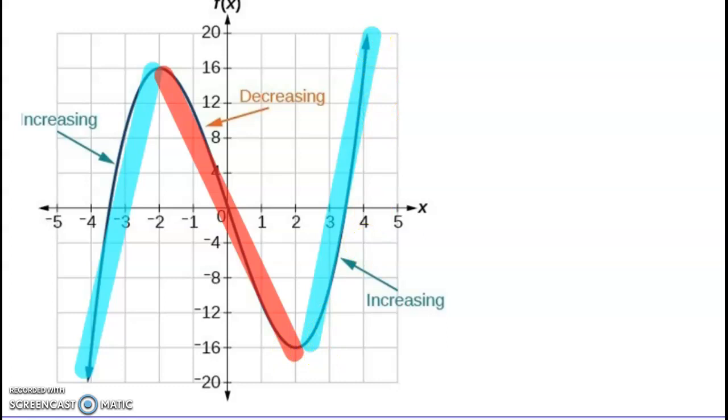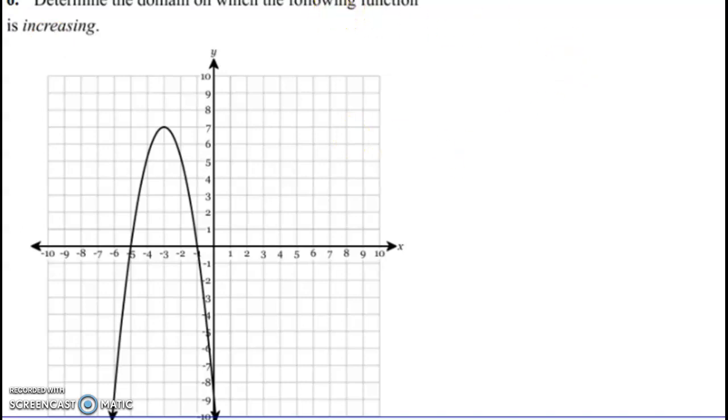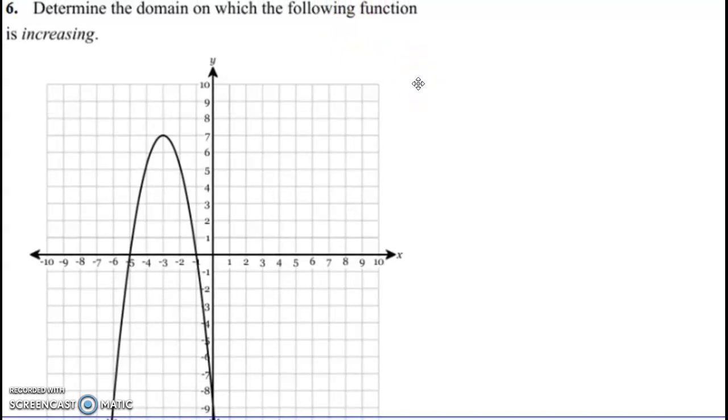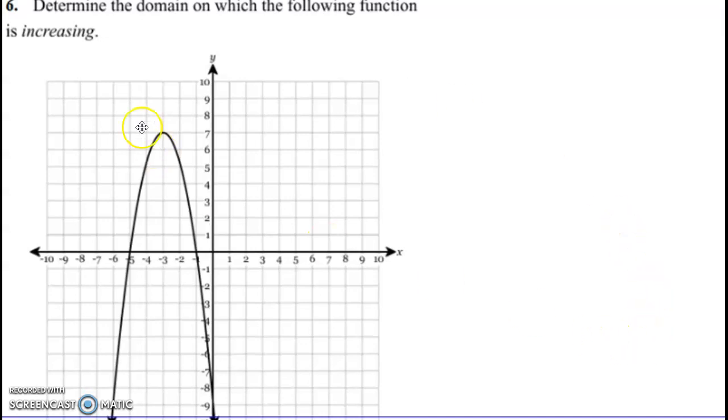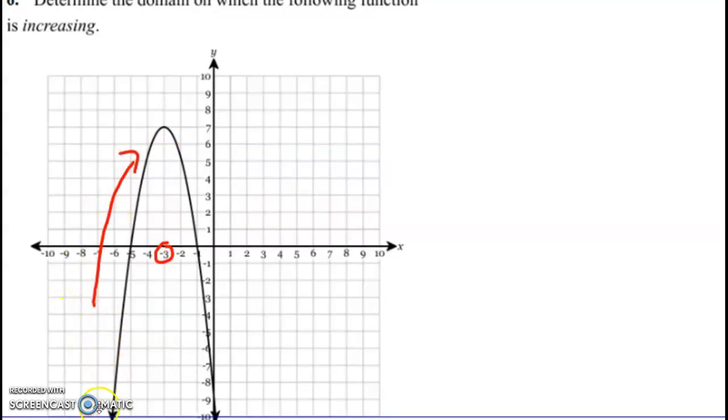Here it says determine the domain on which the following function is increasing. So we want to look - you can't see the arrow right here but it's like an arrow. So it's going up from negative infinity, coming up until it stops about right here.